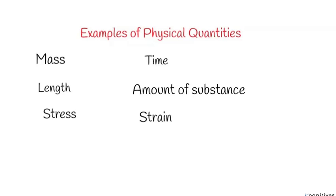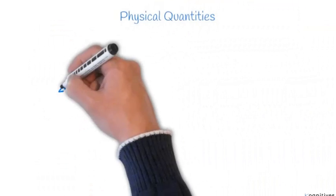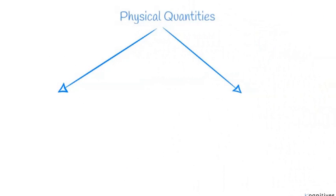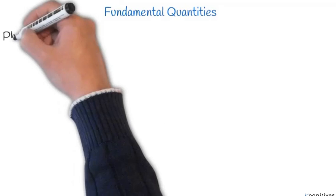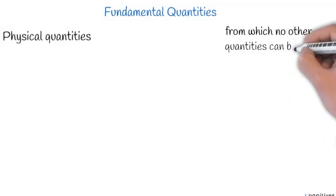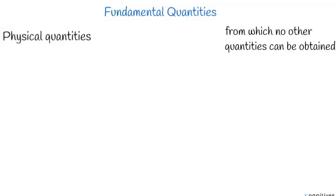All these physical quantities can be divided into two types: fundamental quantities and derived quantities. Fundamental quantities are physical quantities from which no other quantities can be obtained. By the word fundamental, it means this is the last part — you can't go beyond it. No other physical quantities can be gotten from them — they are the lowest of the lowest.